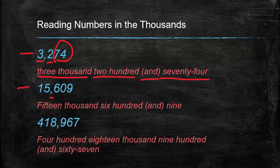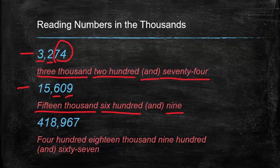The next number: I only see one comma, so right away I know it's in the thousands. But we have two digits here, so that's fifteen thousand. Then six hundred — no tens, but there are nine ones. Fifteen thousand six hundred and nine, or fifteen thousand six hundred nine.